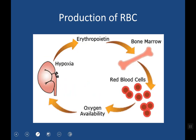RBC production occurs inside the bone marrow. In adults, this active bone marrow occurs at the end of long bones and in flat bones, like the ribs and clavicle. This process is called erythropoiesis. Erythropoiesis is mainly driven by erythropoietin, a hormone secreted from the kidney in response to hypoxia. So more hypoxia leads to more erythropoietin production and more RBC production.